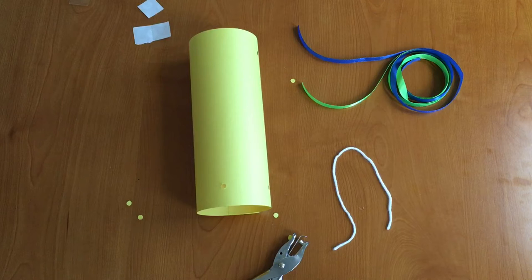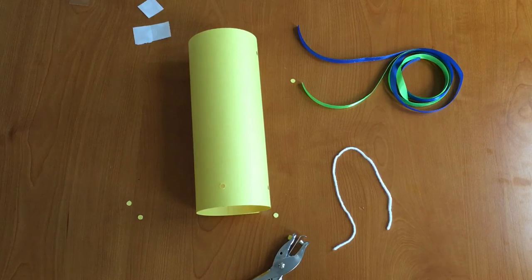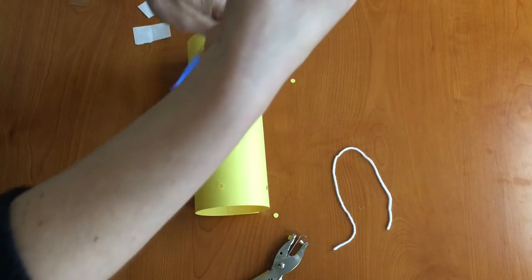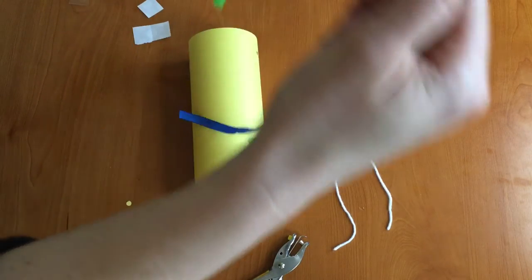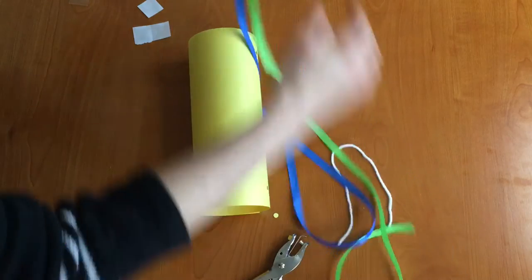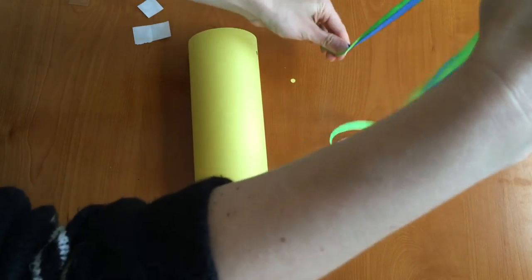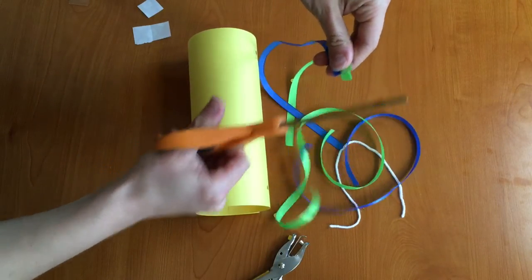Now you'll need a pair of scissors for your next step and with the scissors you want to take your ribbon and cut it into four equal lengths. So I'm going to find the center point on my ribbons and I'm going to cut them right in the middle very carefully.